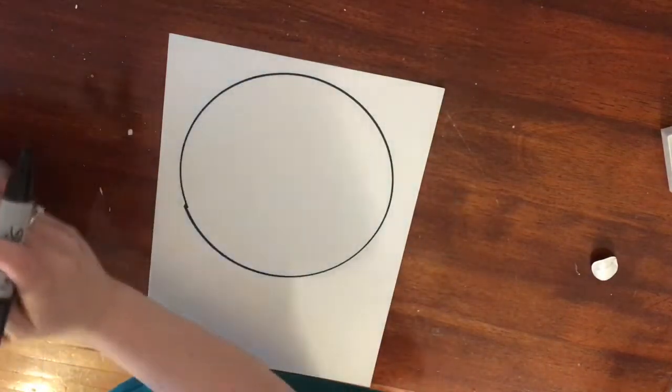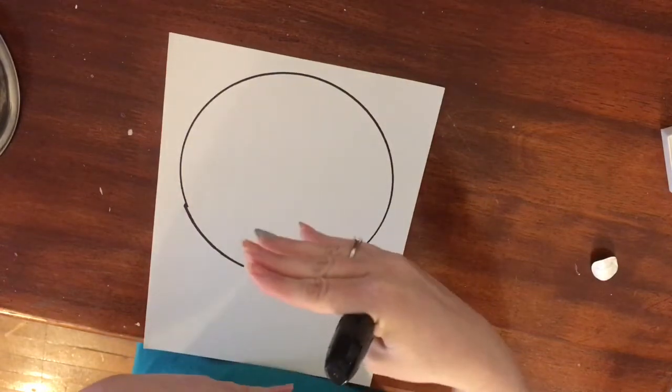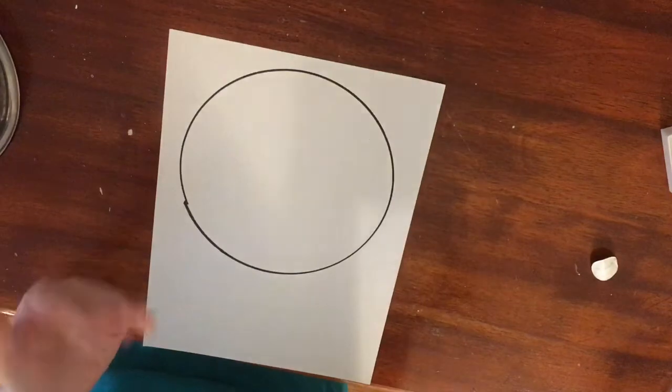Now what I'm going to draw is a trapezoid and a trapezoid has four sides. It's a shape of four sides. Two of those sides are parallel and two of those sides have an angle. So I'm going to show you right now how to do that.